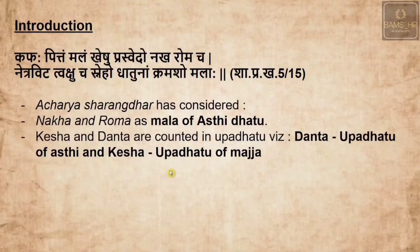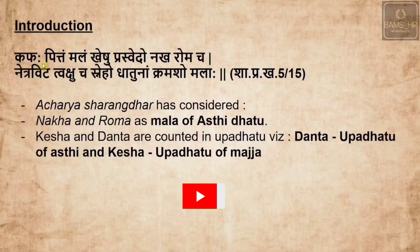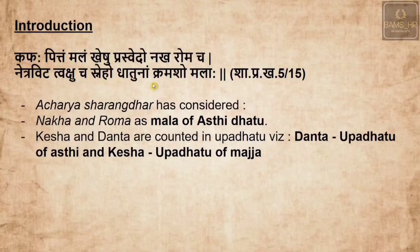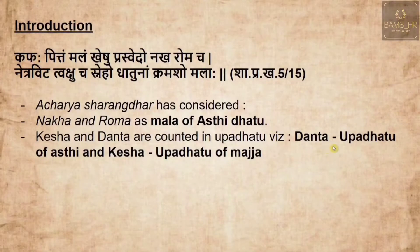When we come to the introduction of these three — where they are being discussed — Sharangadhar states in the Prathamakhanda that kapha pittam malam kheshu prasvedo nakharoma cha, netravit prakshu sneho dhatu naam kramasho malaha. Acharya Sharangadhar considers nakha and roma — the nails and hair follicles — as the mala of Ashti dhatu. Kesha and Danta are counted in the upadhatus: Danta is the upadhatu of Ashti and Kesha is the upadhatu of Macha.